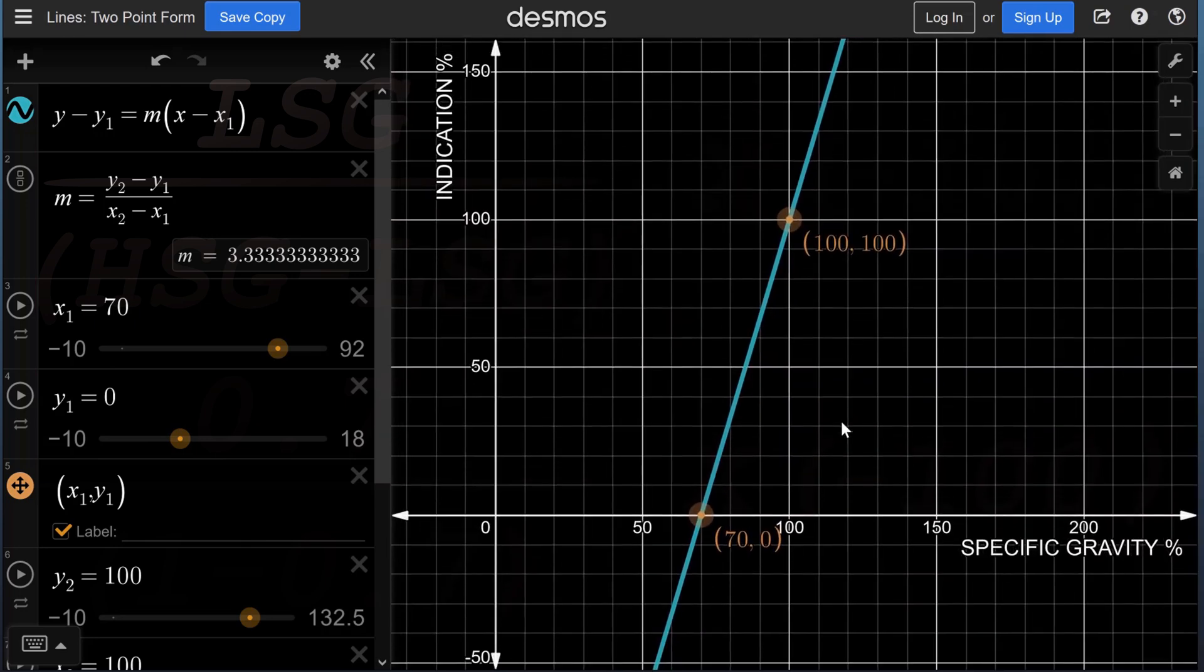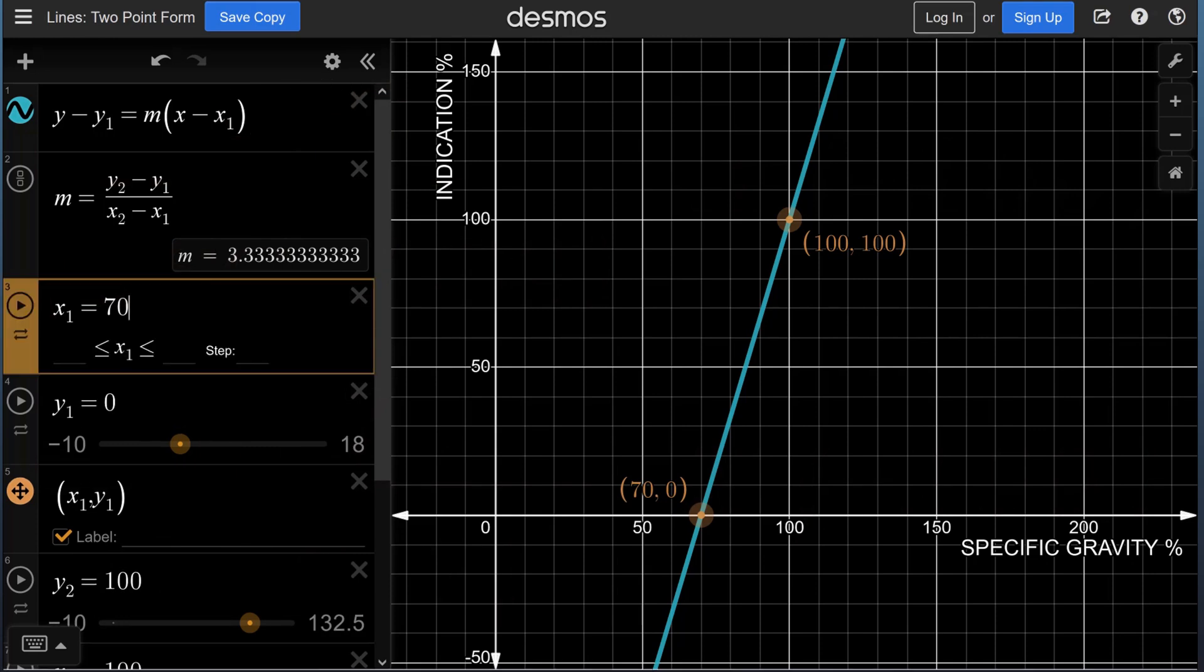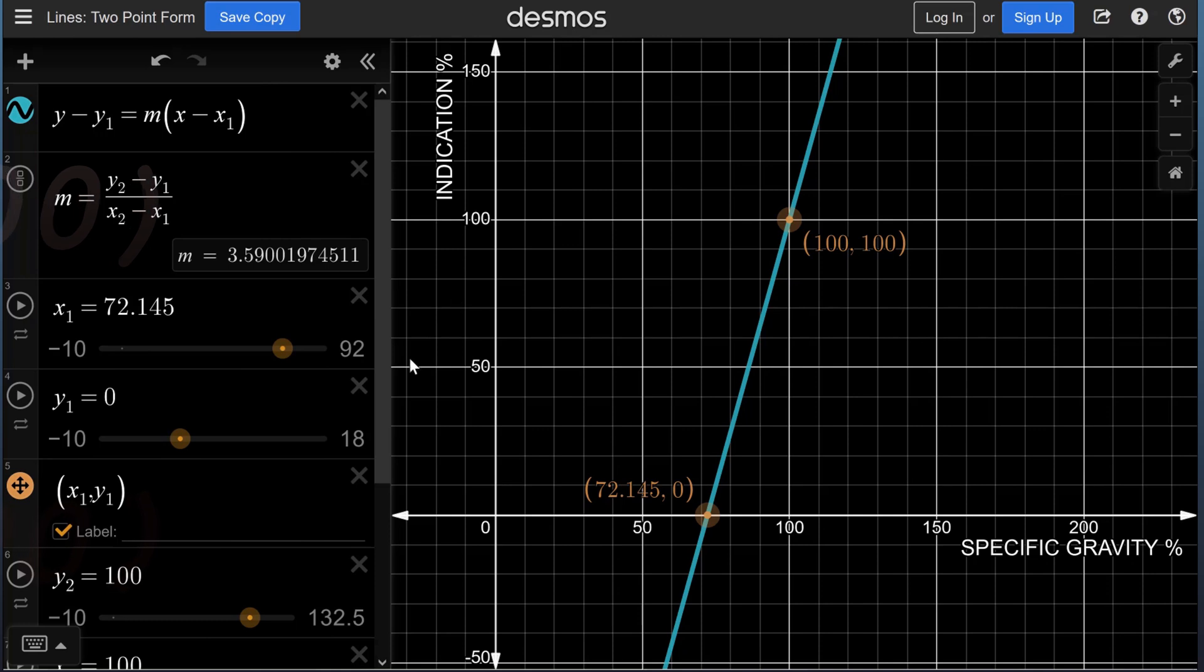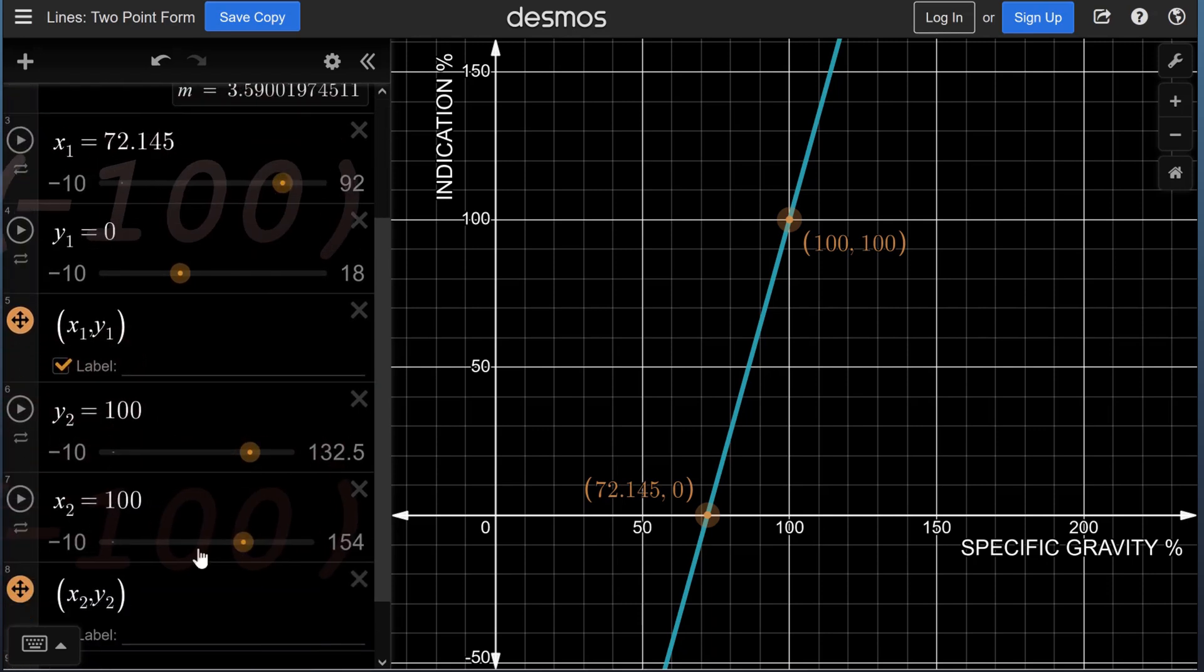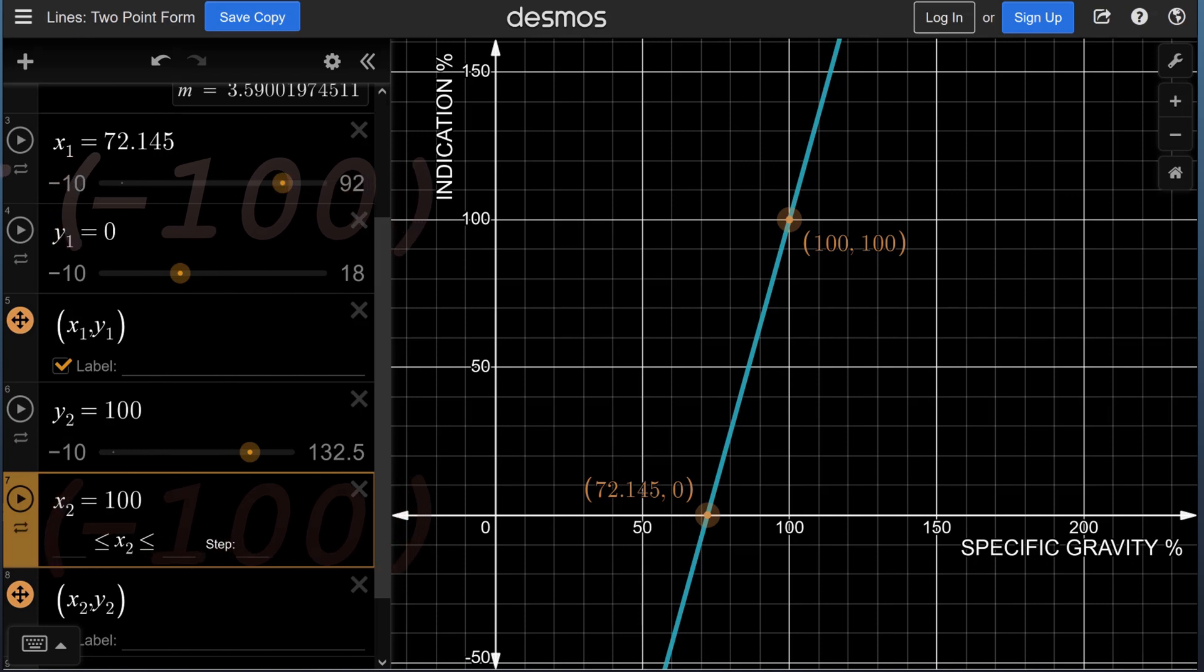Let us take another example with more decimals. We will put the lighter, 72.145, with the indication Y1 remaining 0, and the heavier, 114.298, with Y2 indication value remaining 100. Let us look at it again: filled with the lighter 0, filled with the heavier, 100% indication.